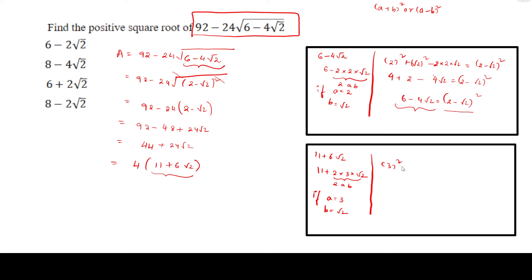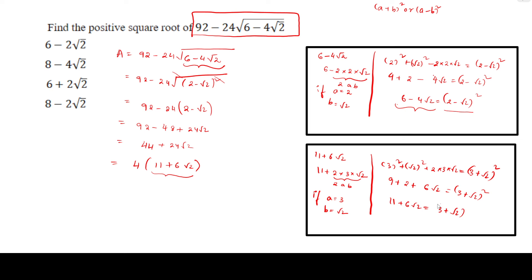3 whole square plus root 2 whole square plus 2 times 3 times root 2, which is nothing but 3 plus root 2 whole square. 3 squared is 9, root 2 squared is 2, and 2 times 3 is 6 root 2, giving 3 plus root 2 whole square. 9 plus 2 is nothing but 11 plus 6 root 2 equals 3 plus root 2 whole square. So in the place of 11 plus 6 root 2, we can write 3 plus root 2 whole square.